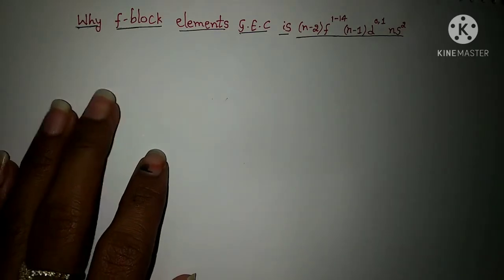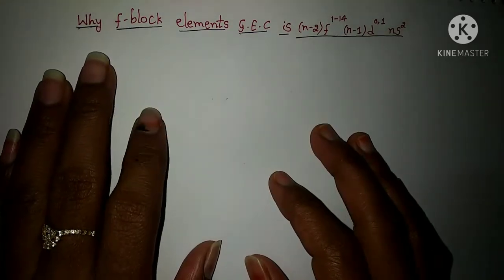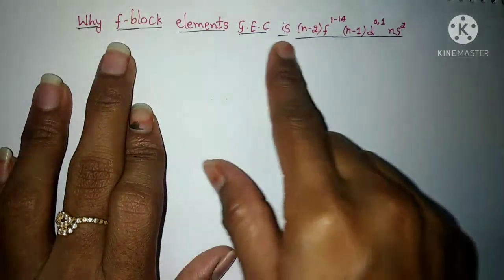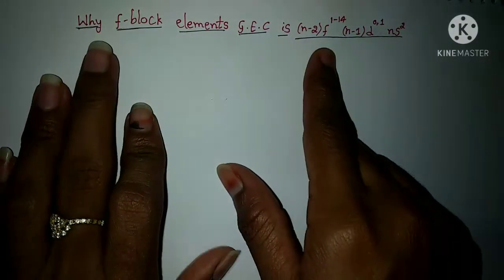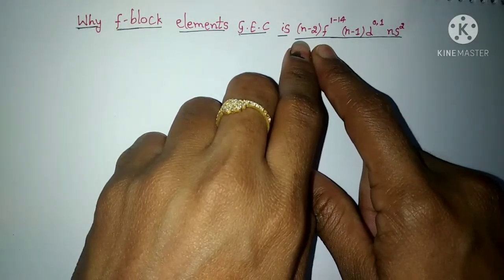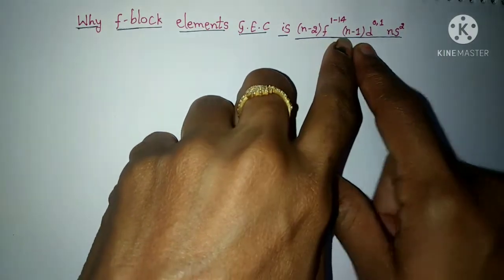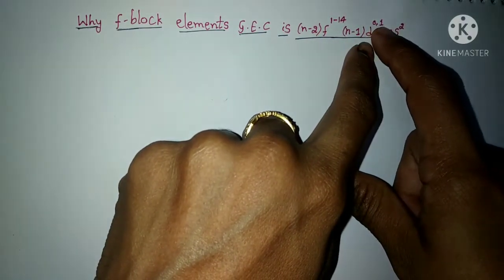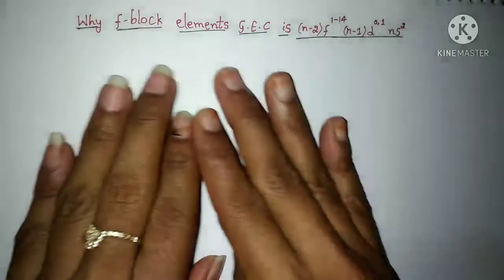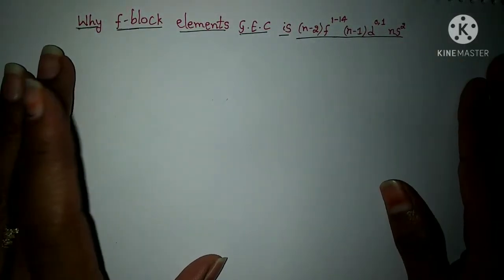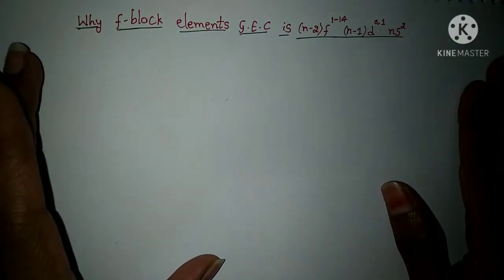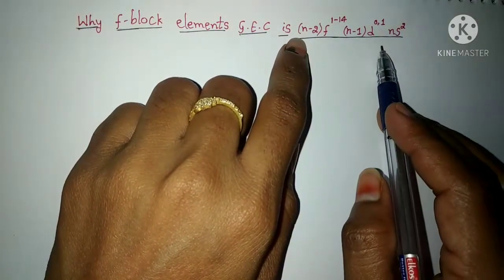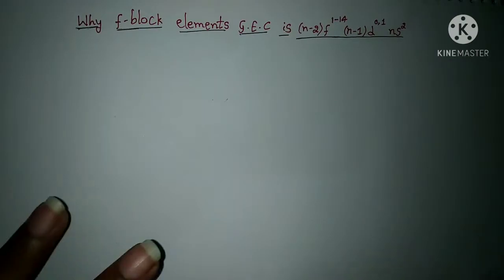Hi students, this is your teacher Simon. In this video we are going to discuss why f-block elements have the general electronic configuration n minus 2 f 1 to 14, n minus 1 d 0 or 1, ns2. I am not going to go in depth here — just how f-block elements got this general electronic configuration, only this part I am explaining.